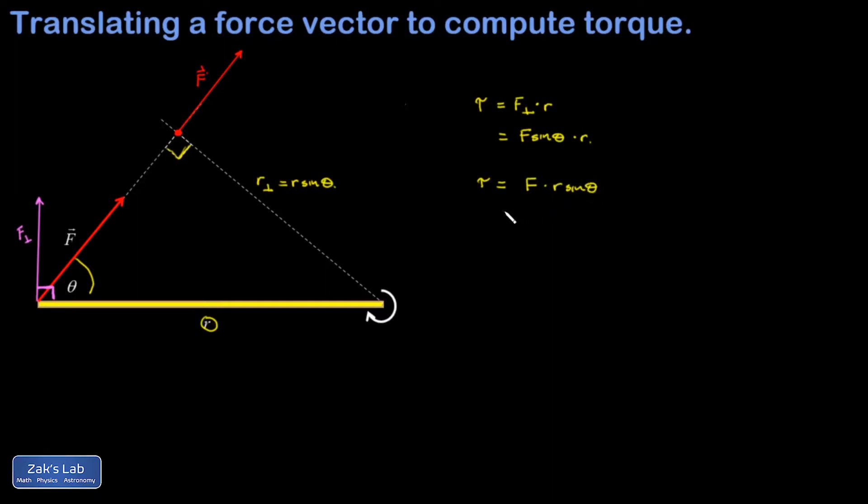And look at that, it's exactly the same formula we got before. So translating the force until the lever arm becomes perpendicular is a perfectly legitimate way of computing torques, and it can save you a lot of work.